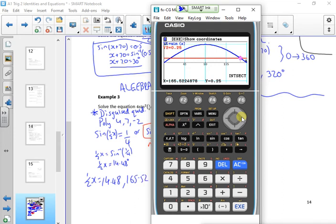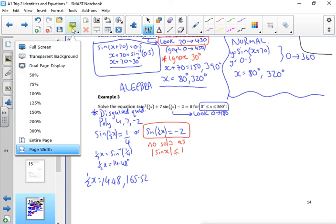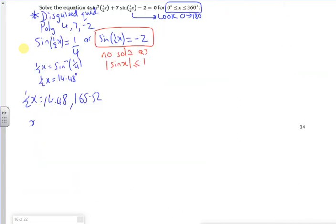On that picture, both those numbers add up to 180 if you look, so you can use that to help you. Now to get from a half x, I just need to double it. So I get x is 28.96 and 331.04 if you're being really technical.